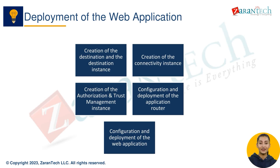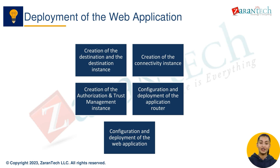Configuration of SAP Cloud Platform connectivity and deployment of the web application involves the following steps: creation of the destination and the destination instance, creation of the connectivity instance, creation of the authorization and trust management instance, configuration and deployment of the application router, and configuration and deployment of the web application.